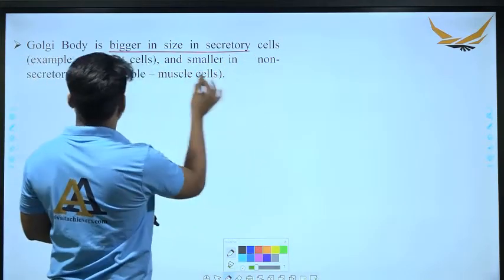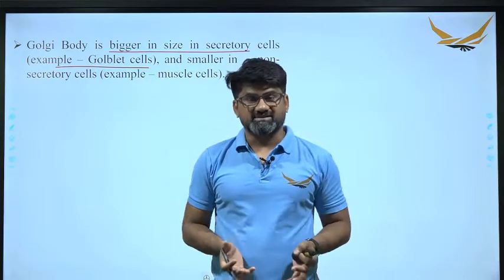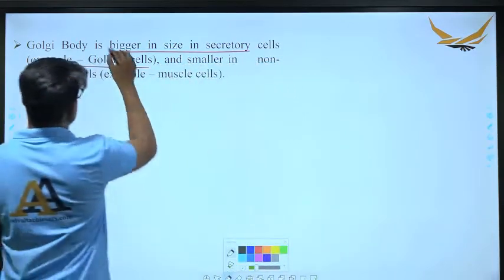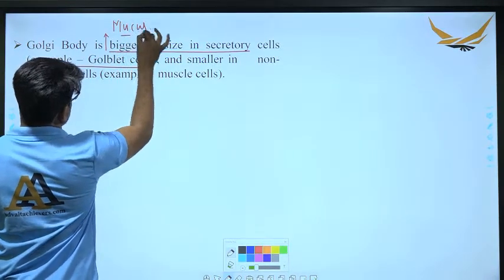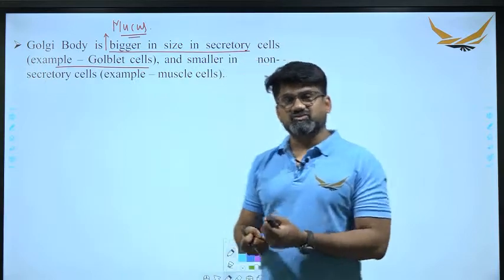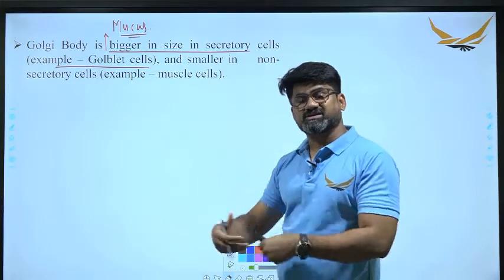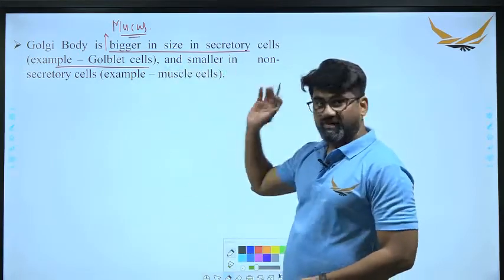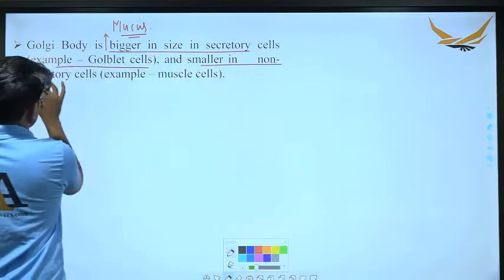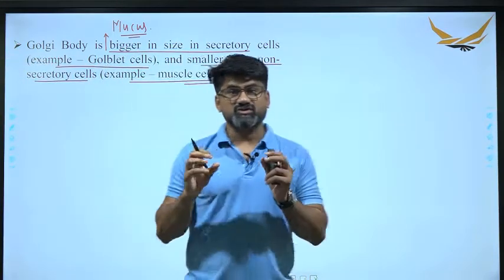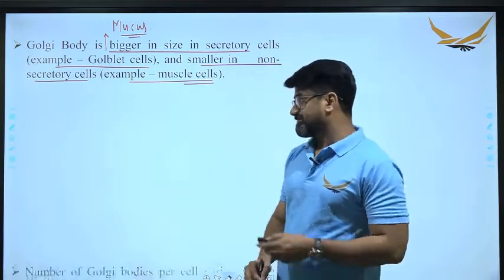Golgi body is bigger in size in secretory cells. For example, in goblet cells — whose function is the continuous secretion of mucus — the Golgi body is larger. It is smaller in non-secretory cells such as muscle cells. The number of Golgi bodies per cell is also variable, depending on the functional parameters of the particular cell.